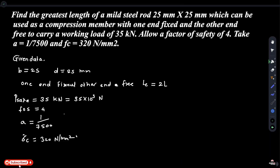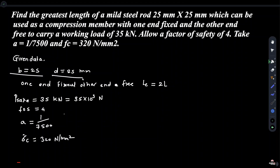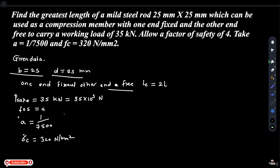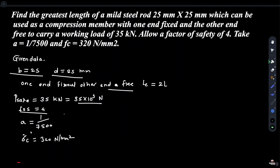Find the greatest length of a mild steel rod with cross-section 25 mm × 25 mm, so B = 25 mm and depth = 25 mm, which is used as a compression member with one end fixed and the other end free, to carry a working load P_safe = 35 kN, with a factor of safety of 4.